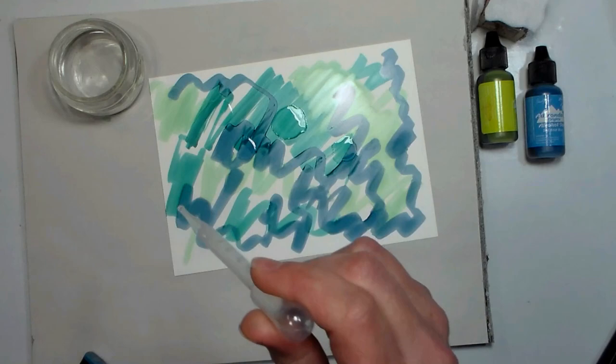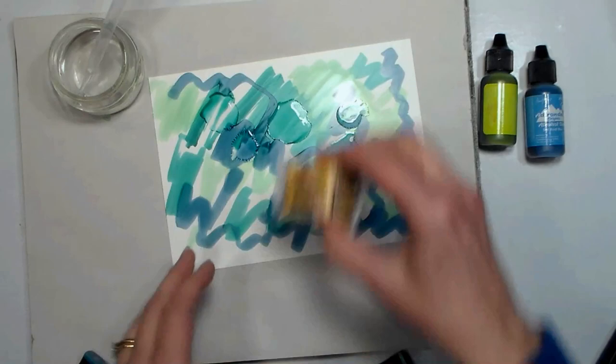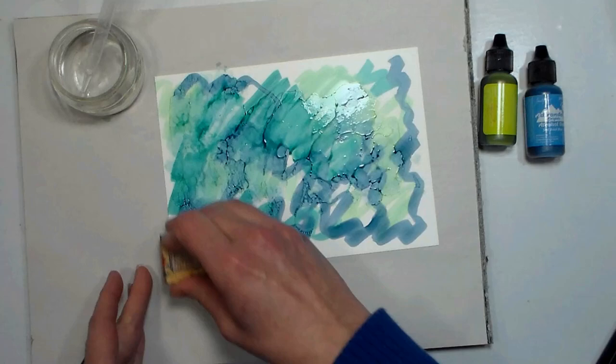Now I'm just using a little pipette and some alcohol, and I'm just dropping it onto the surface. You can see what happens here - it kind of displaces the ink and pushes the pigment around.